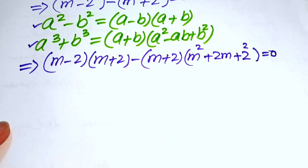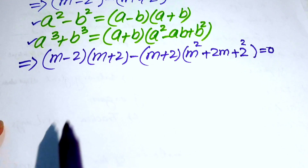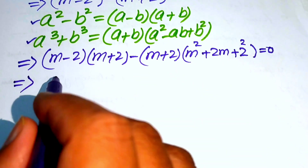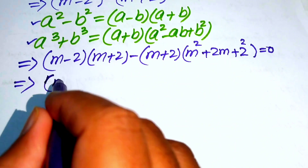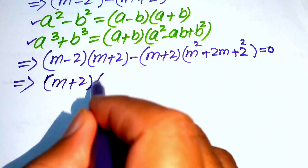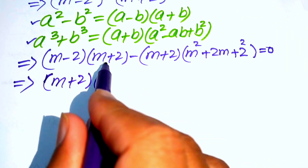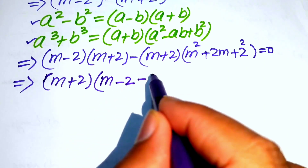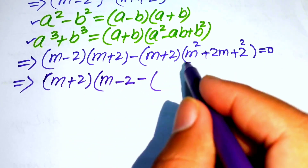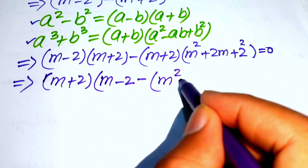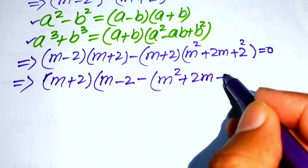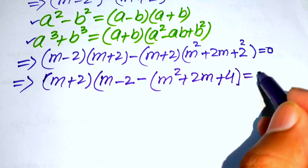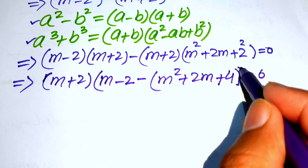We notice that (m plus 2) is a common factor in both terms. Taking it common, we obtain (m plus 2) times [(m minus 2) minus (m squared plus 2m plus 2 squared)] equals 0, noting the minus sign from before.